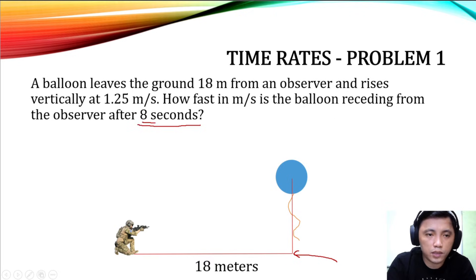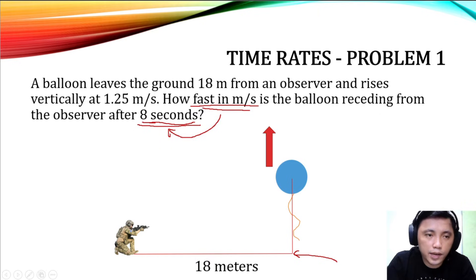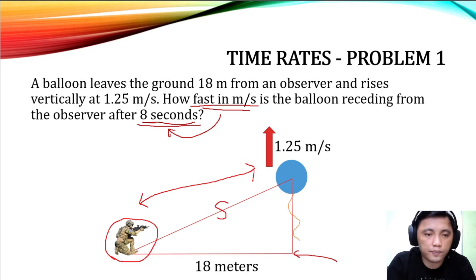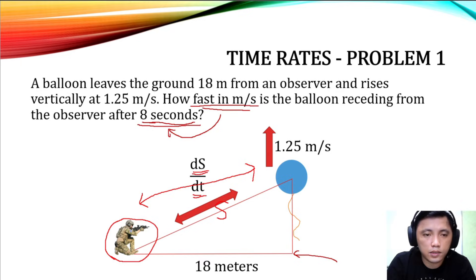This value will vary depending on the initial time. The balloon is rising vertically at 1.25 meters per second. The only motion here is with respect to the balloon rising vertically. We will let this distance as s. The question is asking for velocity or speed, so we are looking for ds over dt — the change in distance over the change in time.